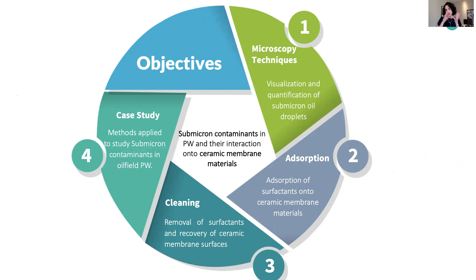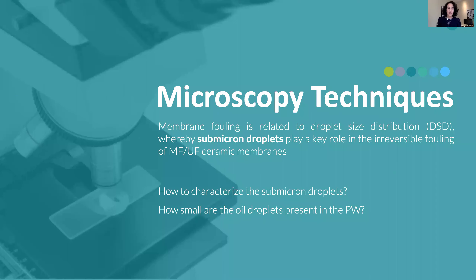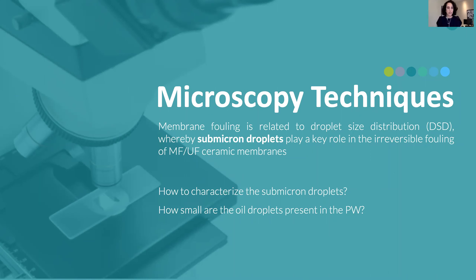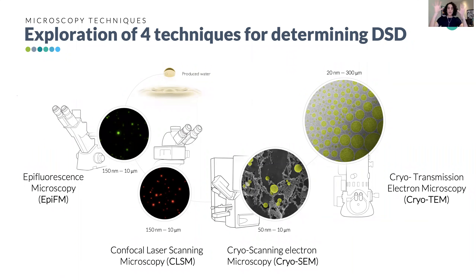In objective one — microscopy techniques — our first hypothesis was that membrane fouling during produced water treatment is related to the droplet size, whereby submicron droplets play a key role in the irreversible fouling of microfiltration and ultrafiltration ceramic membranes. Our first question was: how can we characterize these tiny submicron droplets, how small can they get in real produced water, and how can we see them? After the literature review we identified that microscopy techniques could give us an answer, so we decided to explore four different techniques.